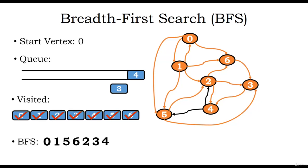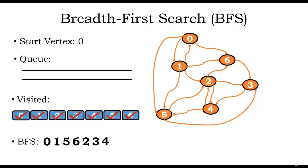We apply a dequeue operation and vertex 4 is dequeued. From vertex 4 we can visit vertex 2, which is already visited, and vertex 5, which is also already visited. There are no other edges for vertex 4. Once the queue is empty, the breadth first search algorithm terminates. This is how breadth first search algorithm works.